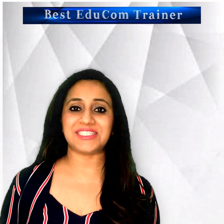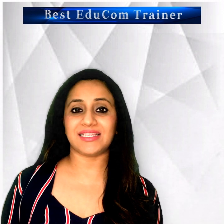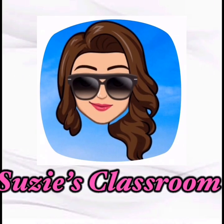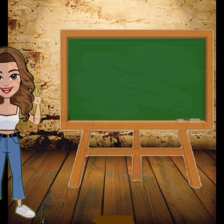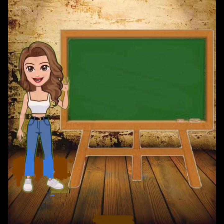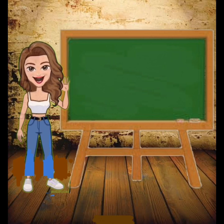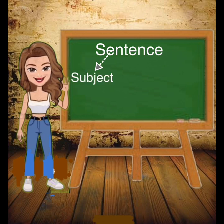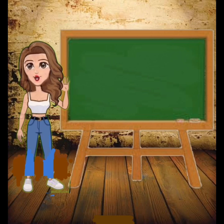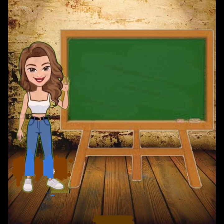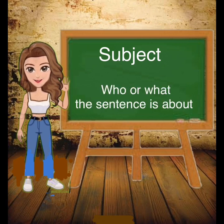Now I will introduce Ms. Suzy, who will explain the sentence structure in a better way. Welcome to the classroom of Ms. Suzy! A complete sentence consists of a subject, which is the naming part, and a predicate, which is the telling part. I will help you learn how subject and predicate make a complete sentence. The subject is the naming part — it tells who or what the sentence is about.